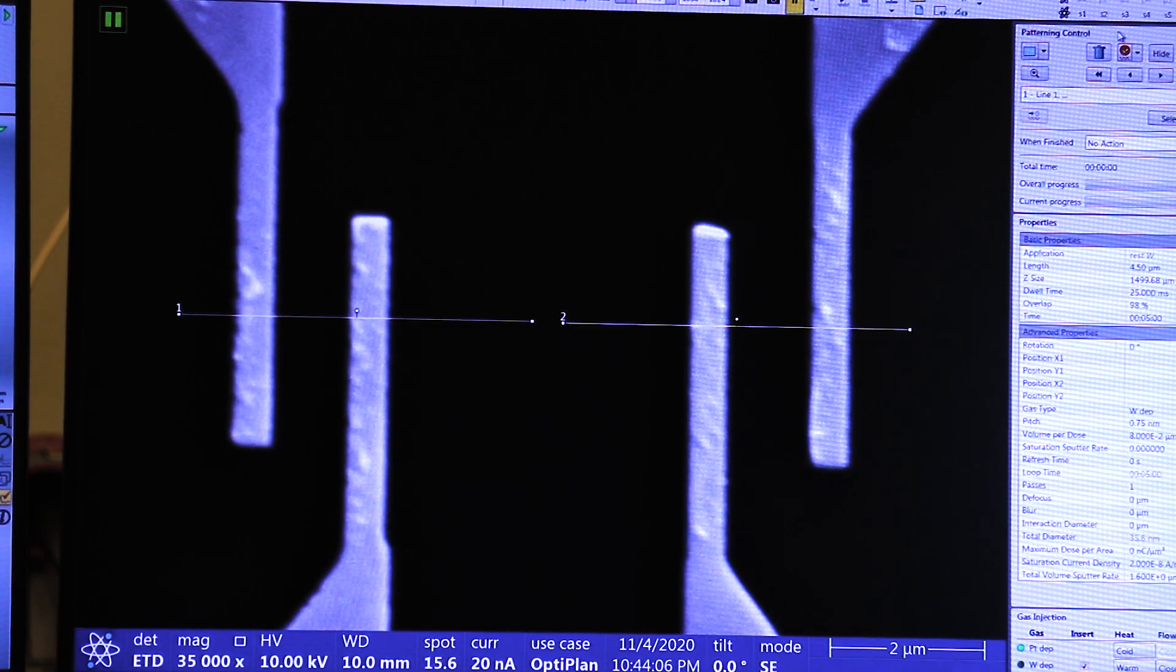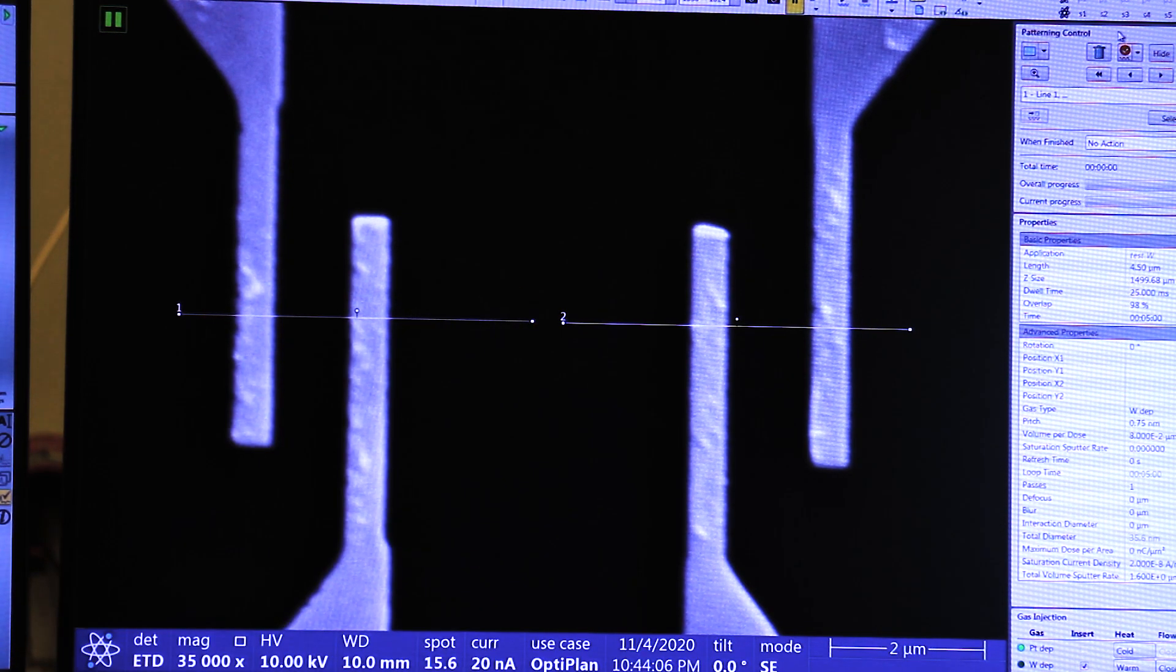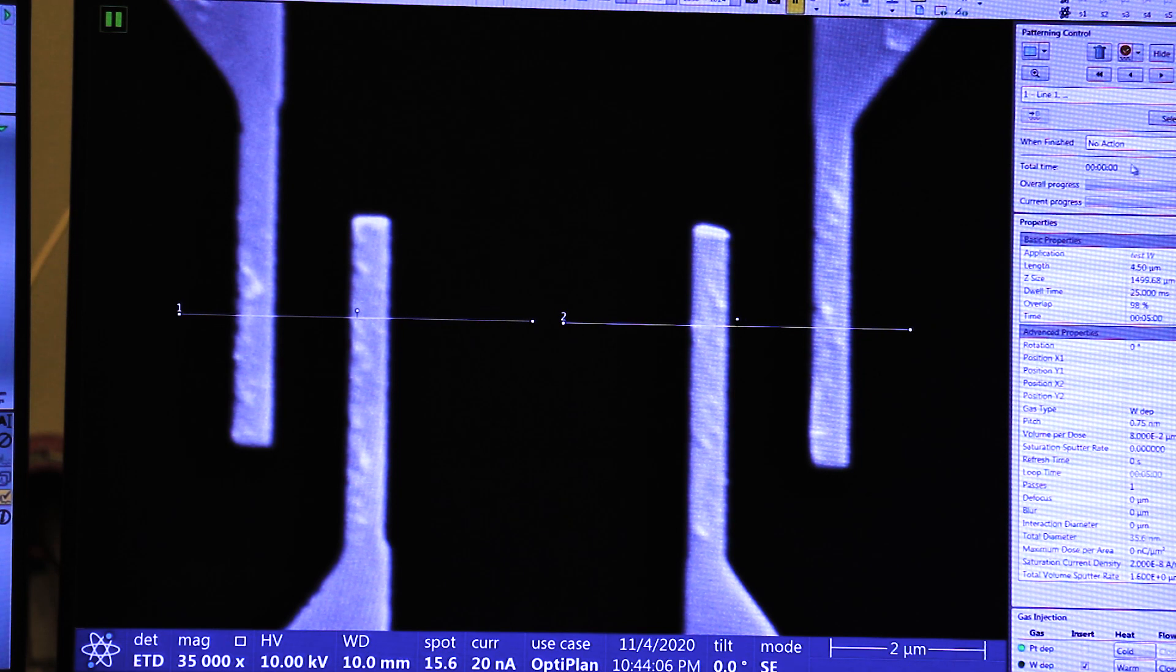Now we're going to deposit our two superconducting wires, one and two, and these are separated by a 160 nanometer gap. That's this bit, right? Yes. Okay.